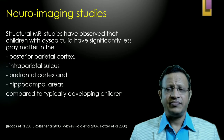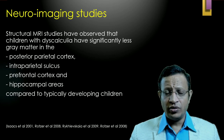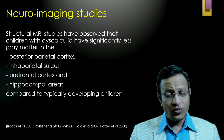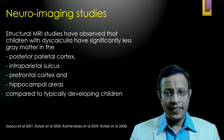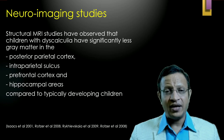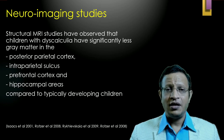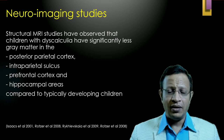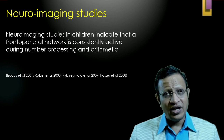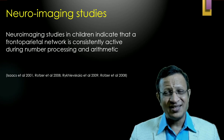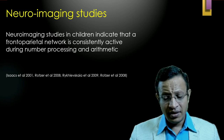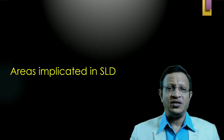Looking at neuroimaging studies, MRI studies in children with dyscalculia compared to normal children observed less gray matter in areas relevant to SLD. Especially in children with SLD, the posterior parietal cortex gray matter is thin; gray matter was also less in the intraparietal sulcus, prefrontal cortex, and hippocampal areas. Neuroimaging studies indicate that the frontoparietal network is consistently active during number processing and arithmetic, and problems have been identified in these areas.